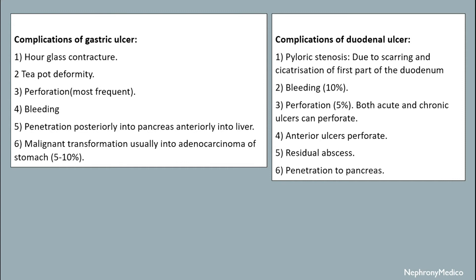Complications of duodenal ulcer include pyloric stenosis, bleeding, perforation, anterior ulcer which may perforate, residual abscess, and penetration to the pancreas.